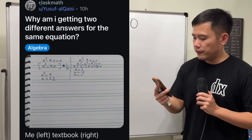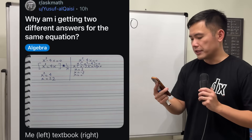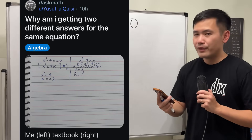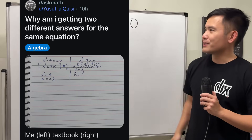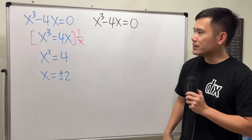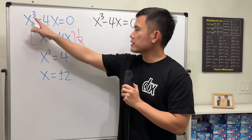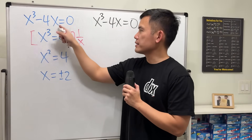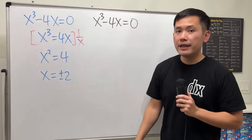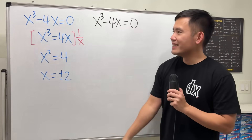Why am I getting two different answers for the same equation? Okay, let's have a look. Right here we are solving x cubed minus 4x is equal to 0, and this is what you did.